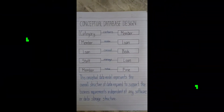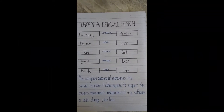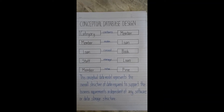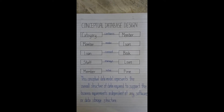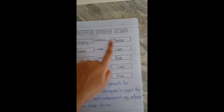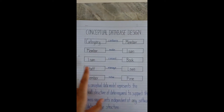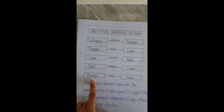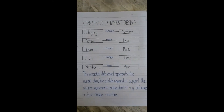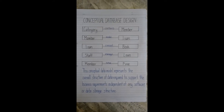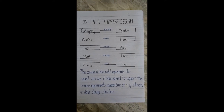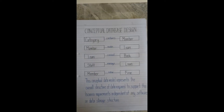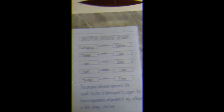We will be discussing the Conceptual Database Design. This Conceptual Database Design for the GAMILAC system's book loaning mechanism is based on the business process provided. The relationships are: Category contains member; Member makes loan; Loan consists of book; Staff manages loan; and Member views fine. This Conceptual Data Model represents the overall structure of data required to support the business requirements, independent of any software or data storage structure, and shows the overall flow of the system.